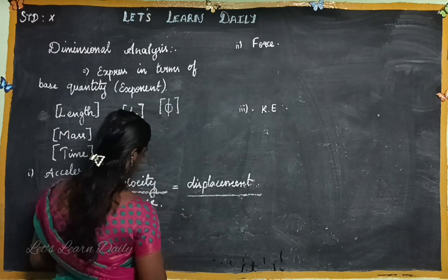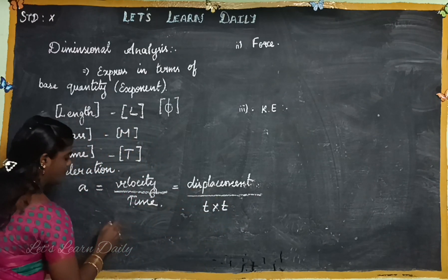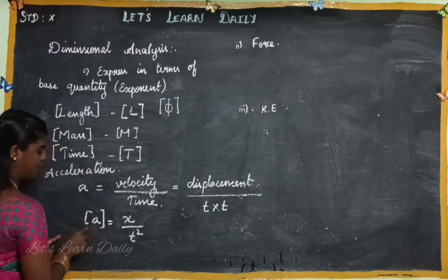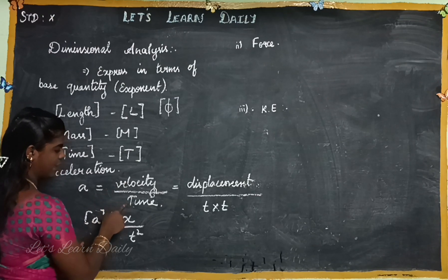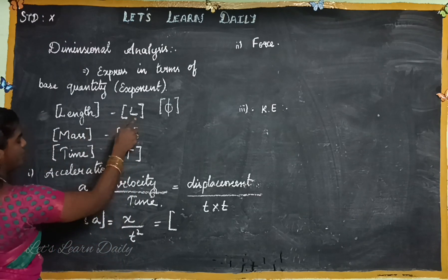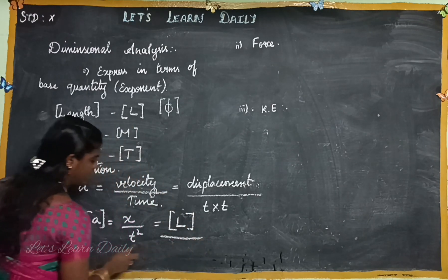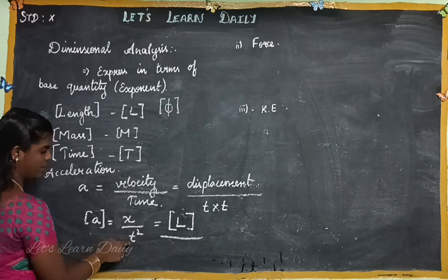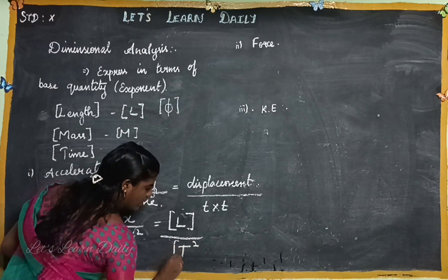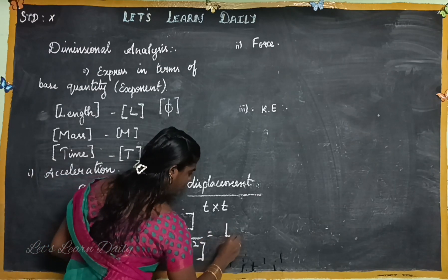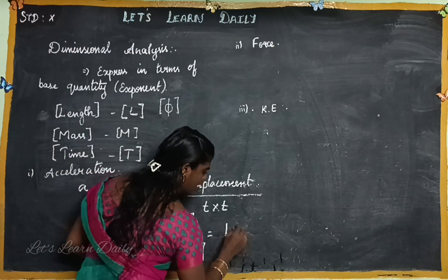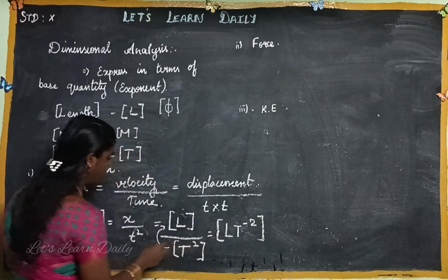So we have displacement by time, and already there is a time in the denominator. So it becomes displacement divided by time times time, which is time squared. Displacement is length L, so we get L divided by T squared, which gives us L times T to the power of minus 2. So the dimension of acceleration is L T⁻².